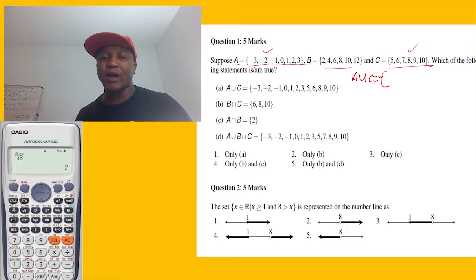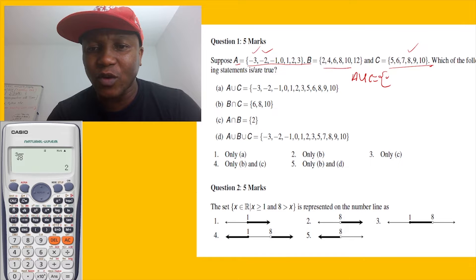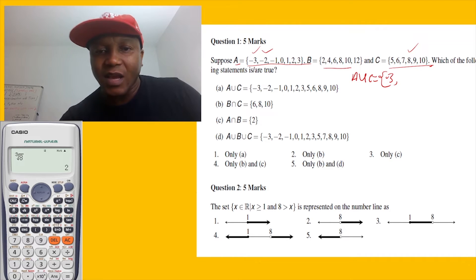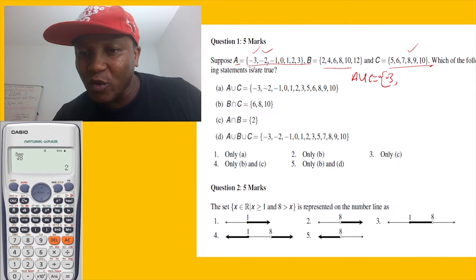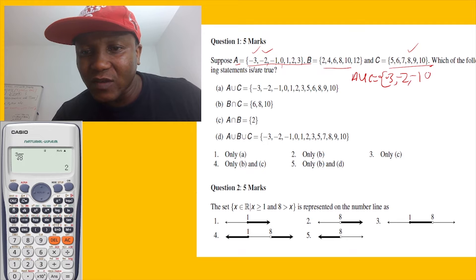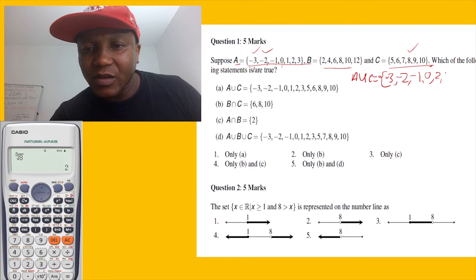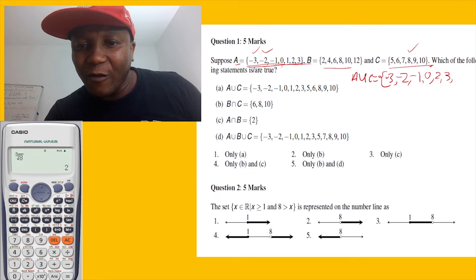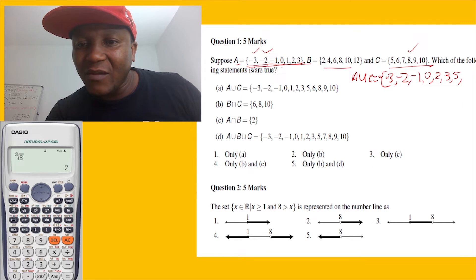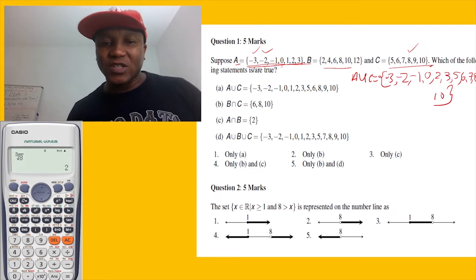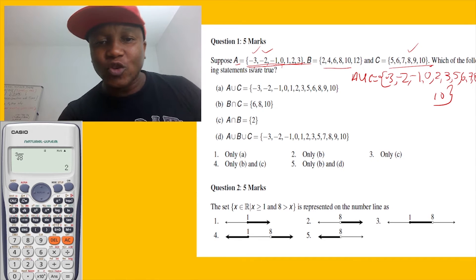Let's put all of A and C together in order. The smallest number is negative three, so we start with negative three, negative two, negative one, zero, one, two, three. Then from C we have five, six, seven, eight, nine, ten. So A union C equals {-3, -2, -1, 0, 1, 2, 3, 5, 6, 7, 8, 9, 10}.